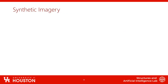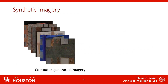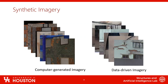When I say synthetic imagery, there are two kinds we're looking at. One is computer-generated imagery — images generated using computer graphics. The other is data-driven imagery, where images are generated purely based on data. I'm going to talk about both of these now, starting with computer-generated imaging.